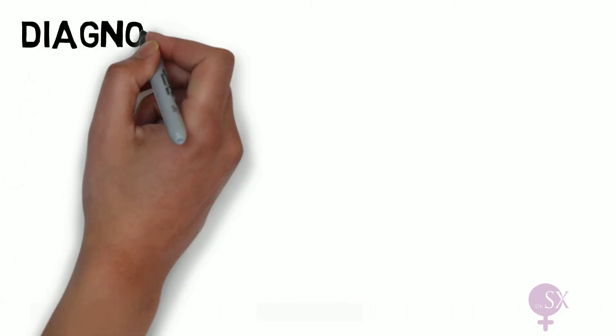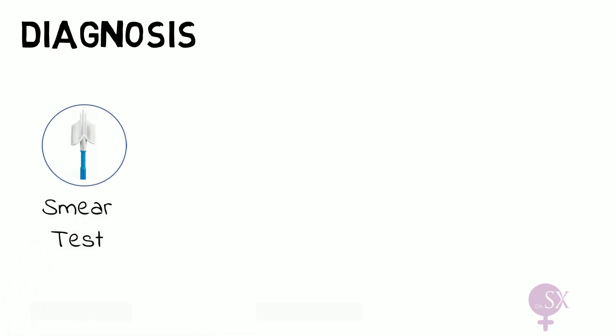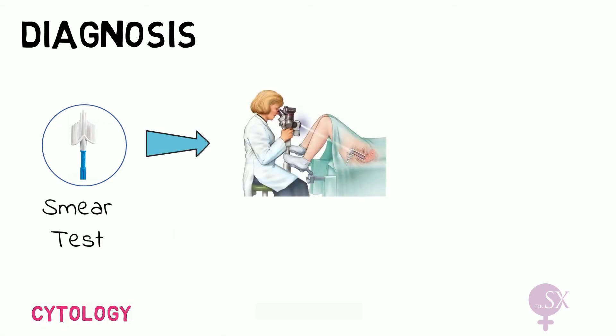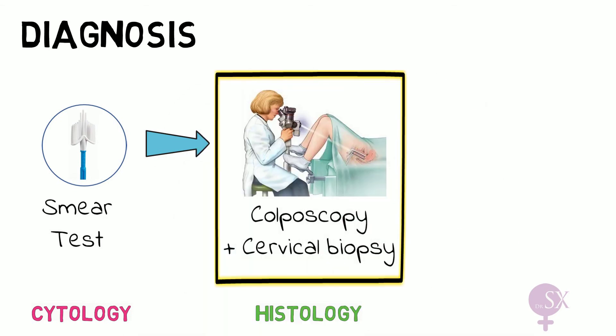Moving on to diagnosis: if a patient presents with any of those symptoms, a smear test must be taken to examine the cells, giving us a cytological diagnosis. Next, a colposcopy will be performed and a cervical biopsy taken; this provides the histological diagnosis and is when the actual diagnosis of cervical cancer is made. Once cancer is identified, CT and MRI are performed for staging.